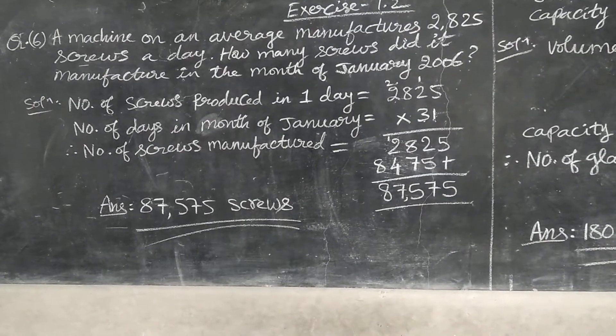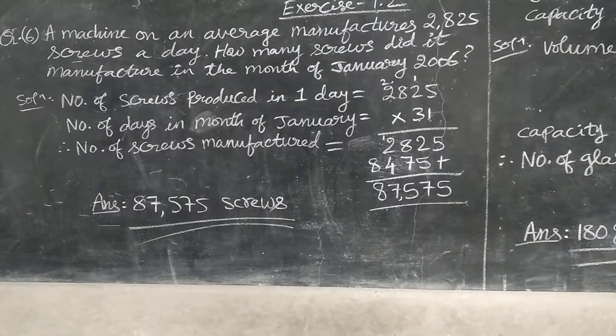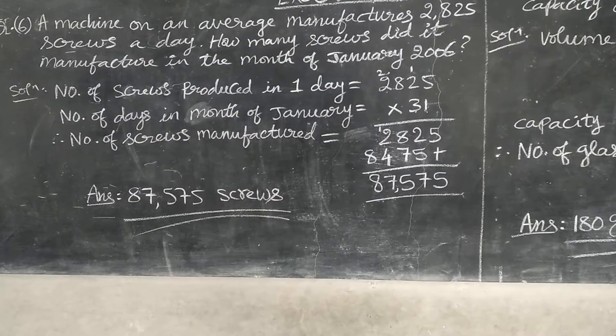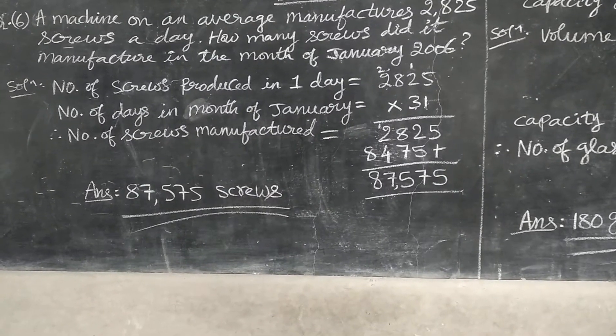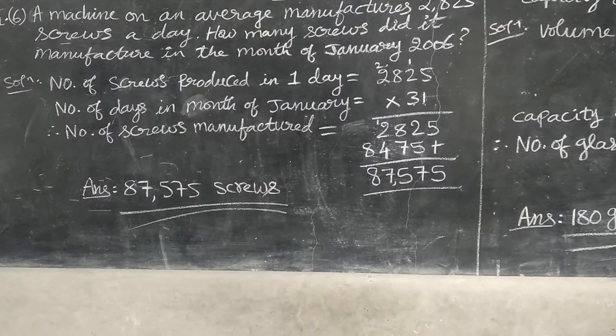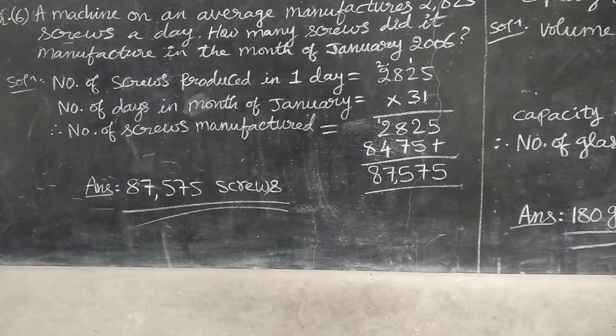Multiplication you know. Start from one's place. Take 1, multiply for 2825. After that take number 3 and multiply by 2825. You will get 87,575.